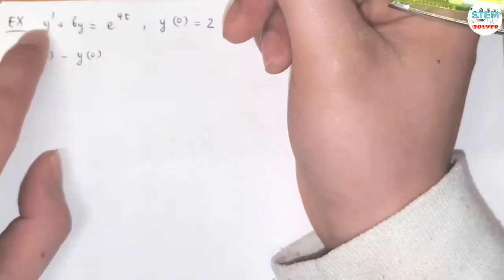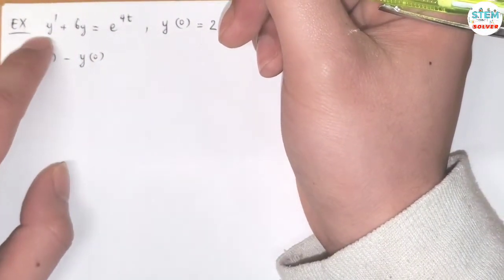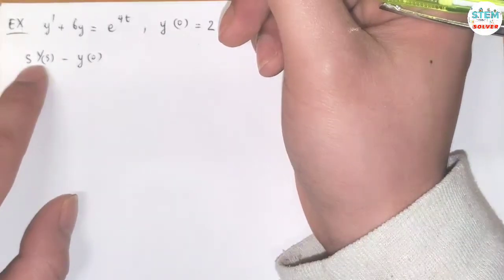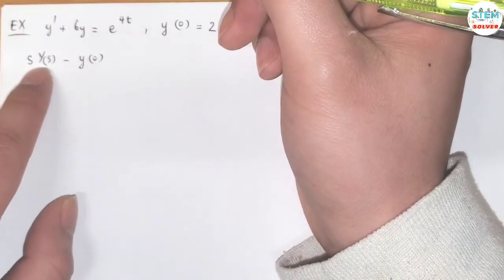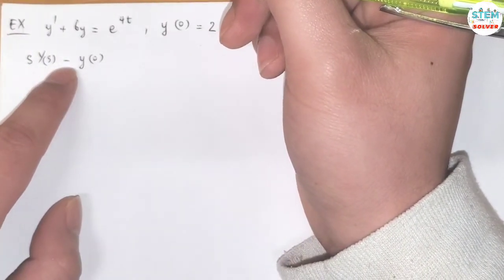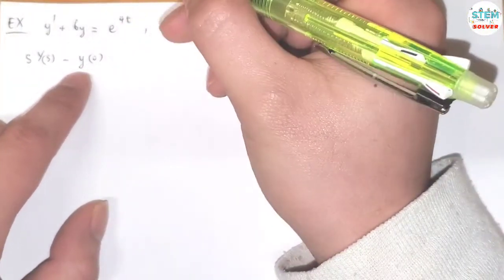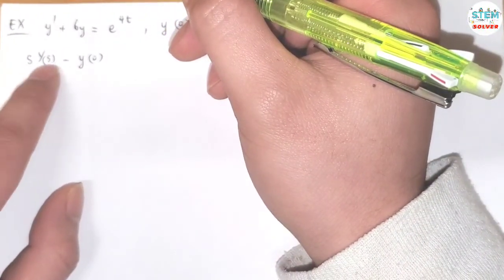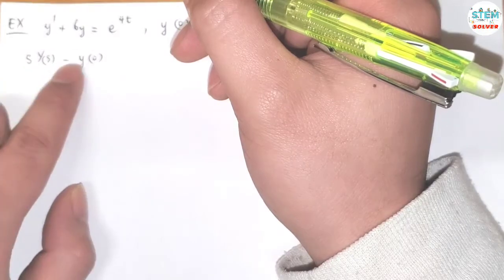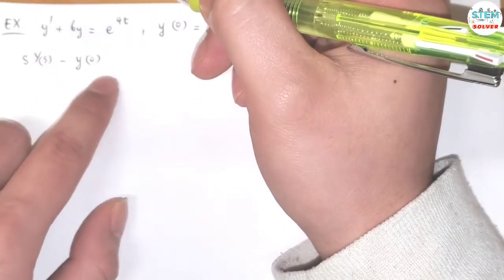So for this one, you have Y prime. So you have S to the first times capital Y of S, always multiply by capital Y of S, minus then Y of 0, because you go down from S to the first, then go down to S to the 0, then this is where you stop.